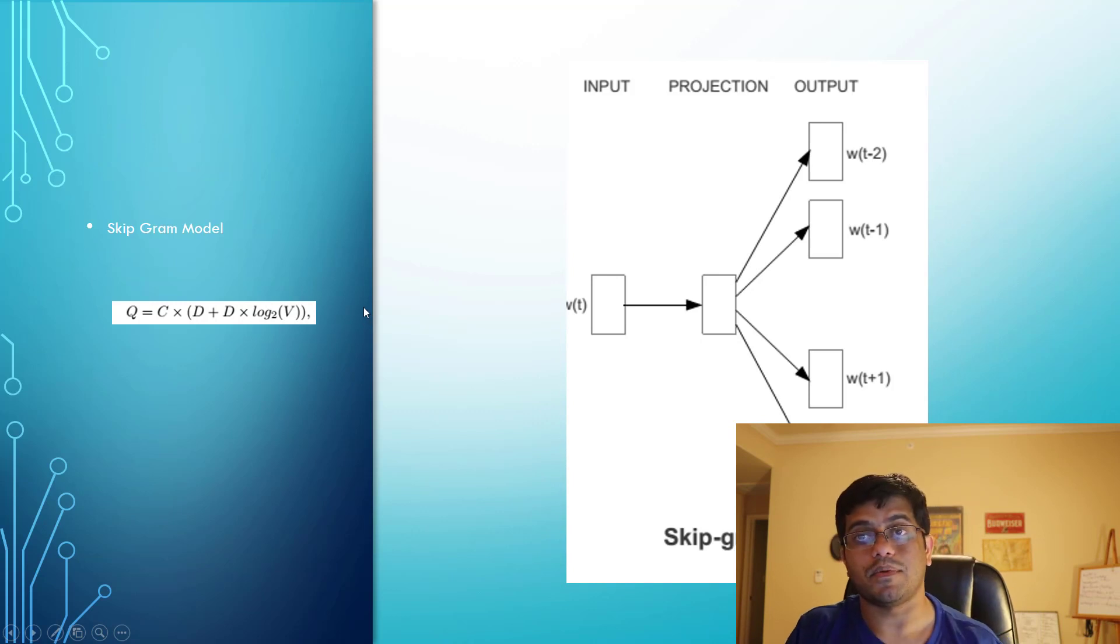The second model is the skip-gram model. Skip-gram is different from continuous bag of words because instead of using the surrounding words to predict the center word, we predict from the center word the surrounding words. It's actually the reverse way.